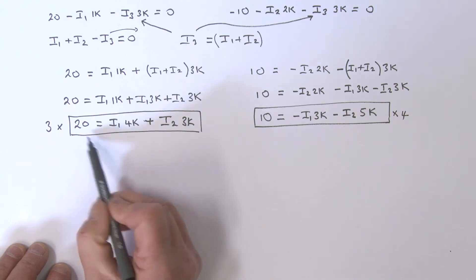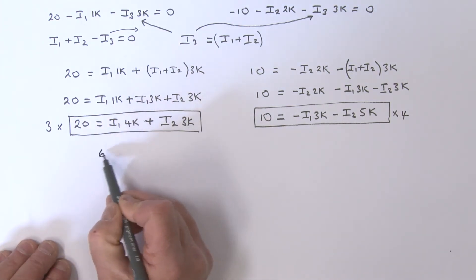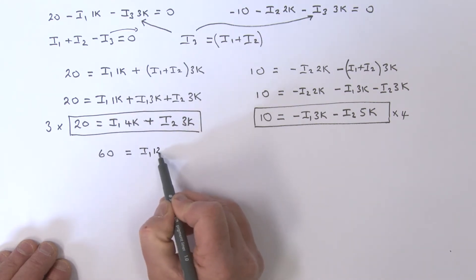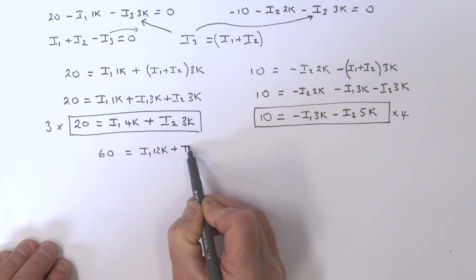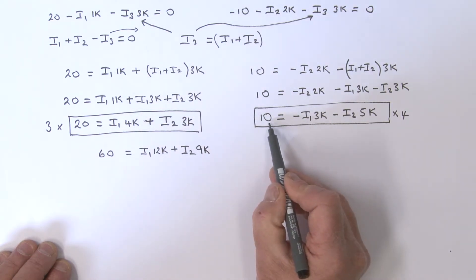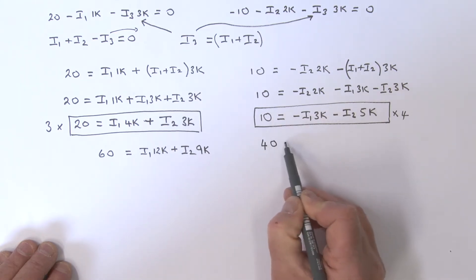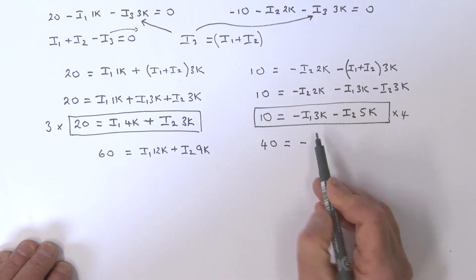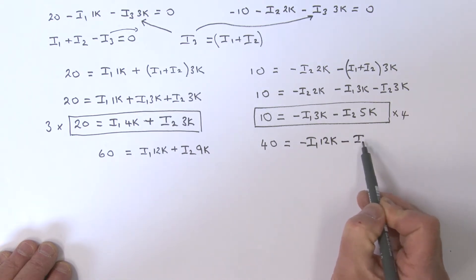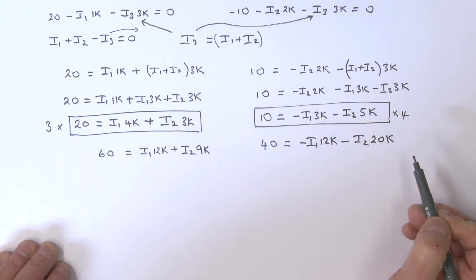If I multiply this by 3, I get 60 equals i1 times 12k plus i2 times 9k. That's that equation. What about this one? Multiplying by 4, that's 40 equals minus i1 times 12k, and then minus i2 times 20k.